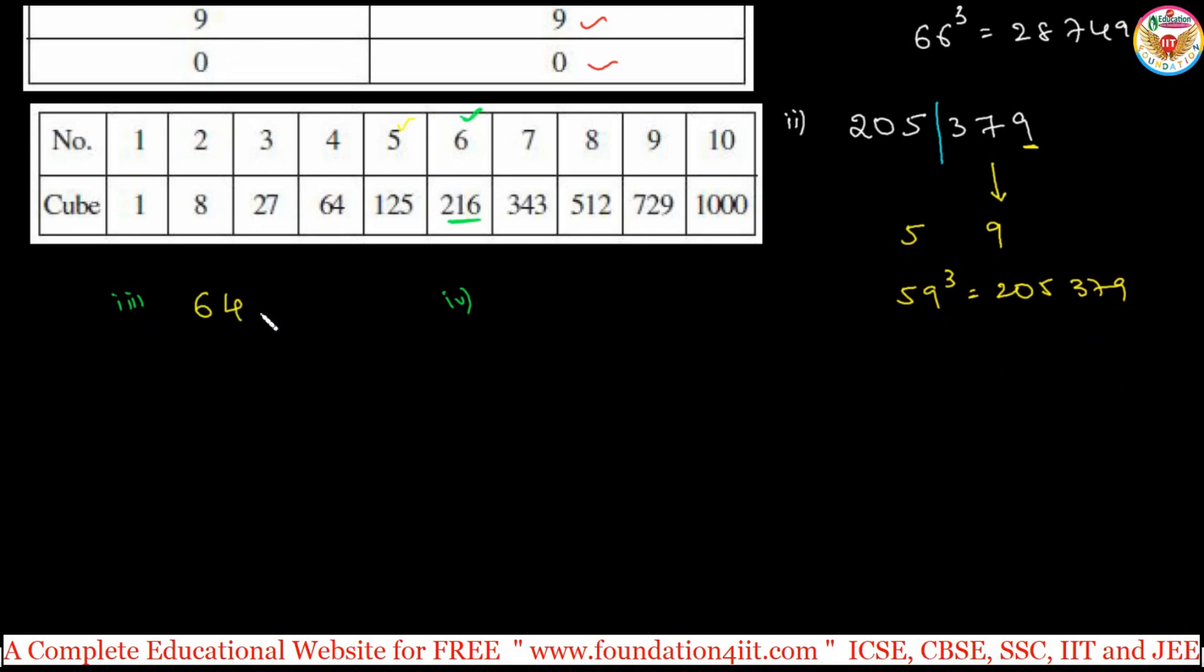That is 681,472 is one number, and one more number 830,584. So what is the cube root of this? Cube root symbol is like this. To find out this, only check this 2.